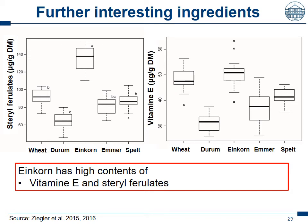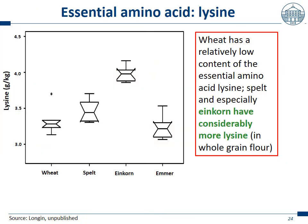To summarize this part: in ancient grains there are interesting ingredients inside. Especially einkorn is a highlight with a lot of interesting ingredients. Looking also at essential amino acids — which we are not able to build ourselves and thus must take with our food — leucine is an amino acid which is quite poor in bread wheat. Spelt has a bit more and einkorn has considerably more than bread wheat. Thus to improve leucine content in the daily diet, we could eat einkorn. But once again, we should eat whole grain flour.